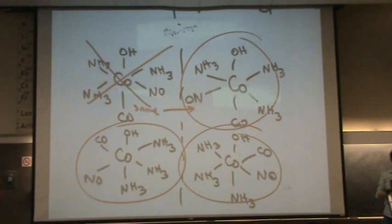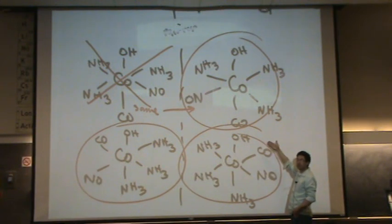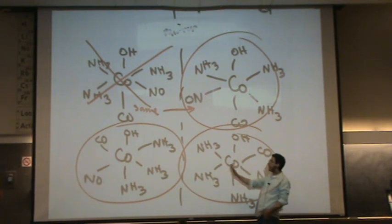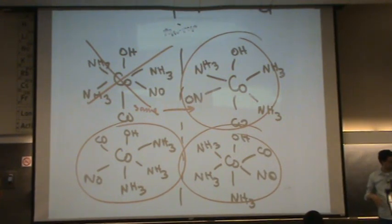We're talking about geometric isomers. Remember, geometric and optical isomers are stereoisomers. So, the top to bottom are called geometric isomers, a subset of stereoisomers. And right and left, these are optical isomers, which is a subset of stereoisomers.